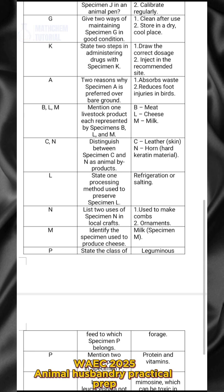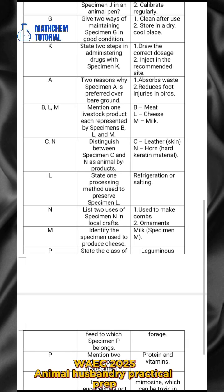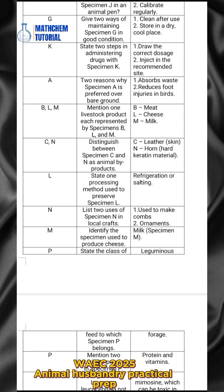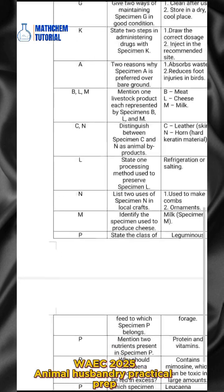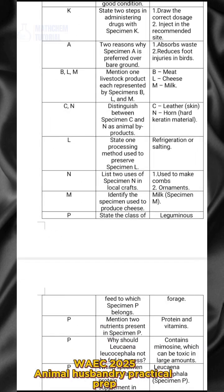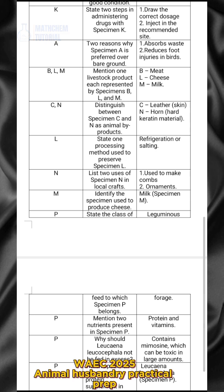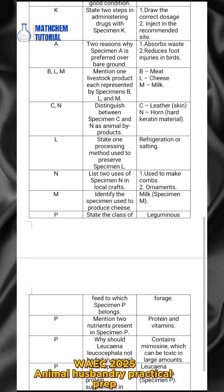For specimens C and N, distinguish between them as animal by-products. Specimen C is leather, that is skin. Specimen N is horn, which is a keratin material. For specimen L, state one processing method used to preserve it. The answer is refrigeration or salting.